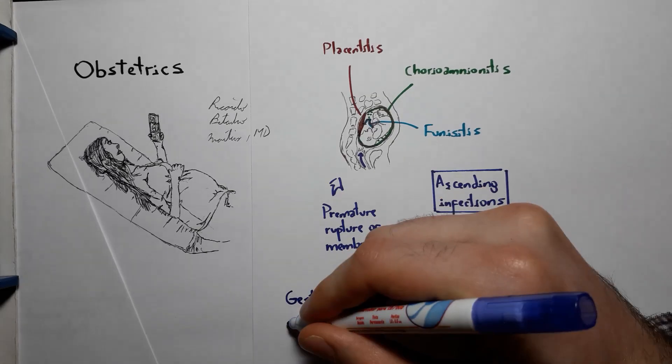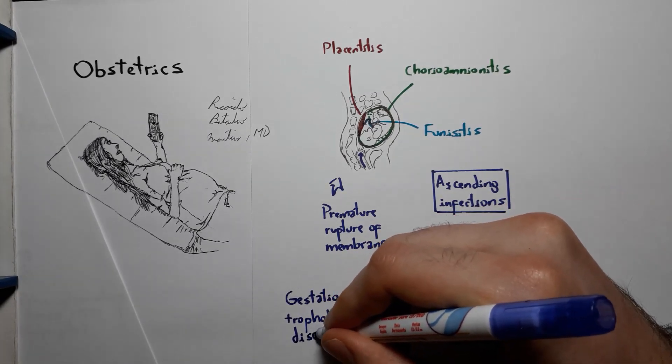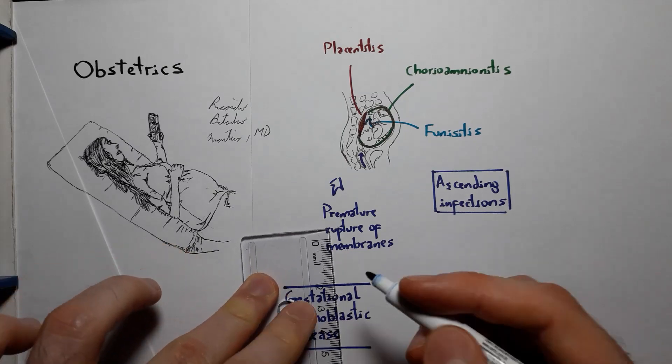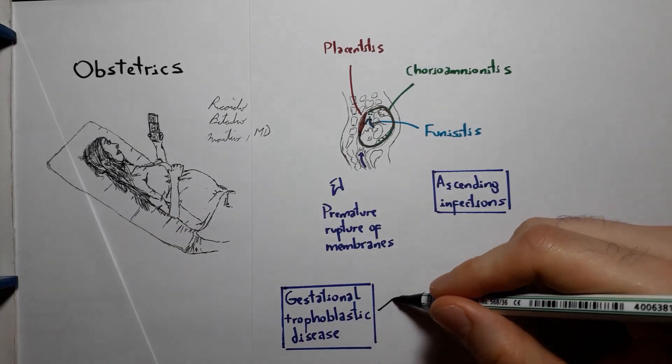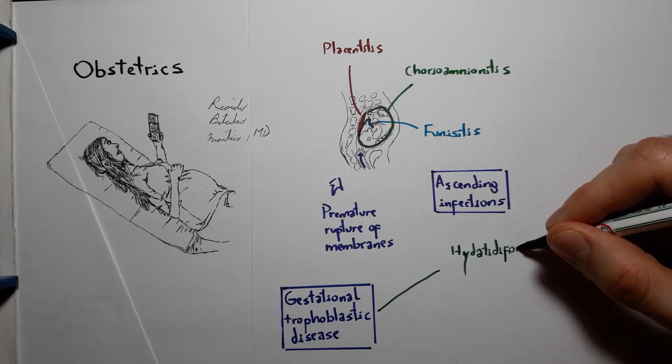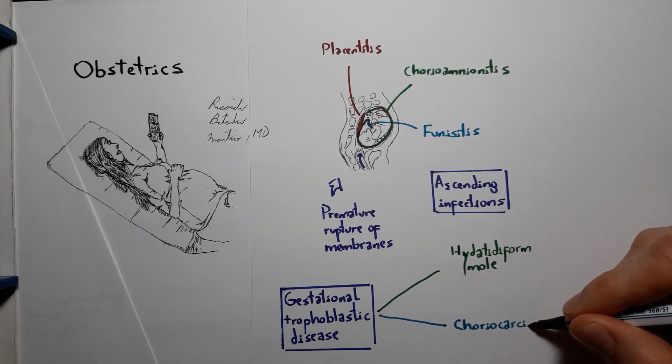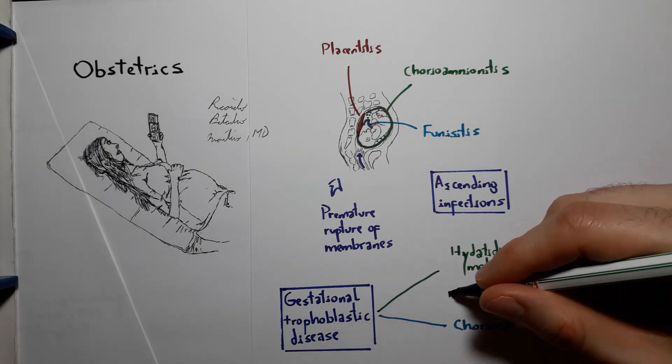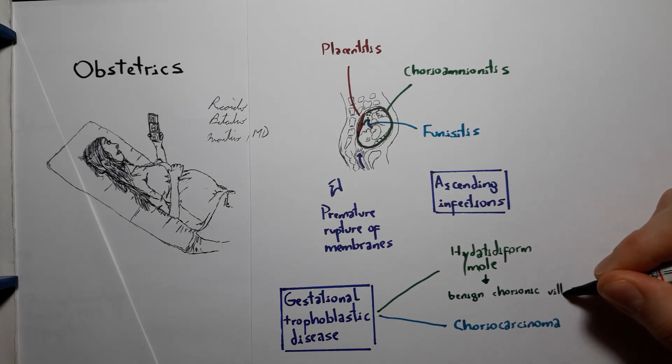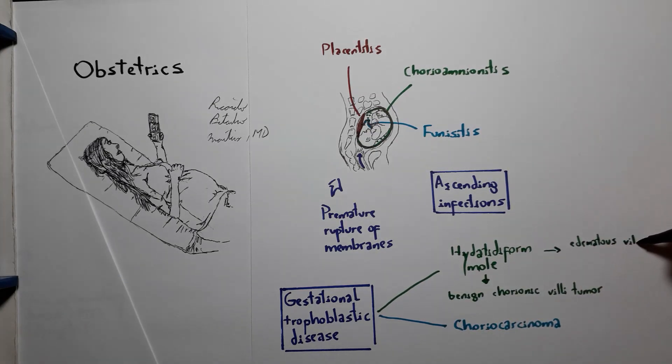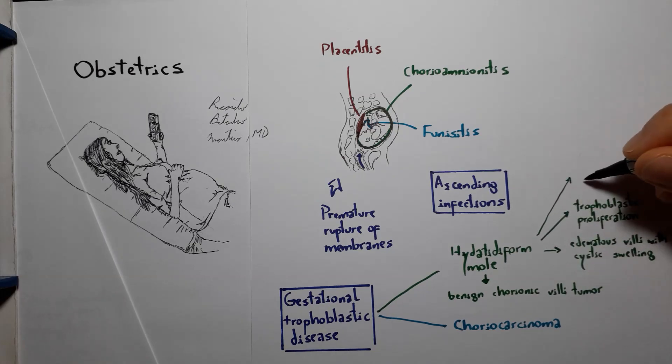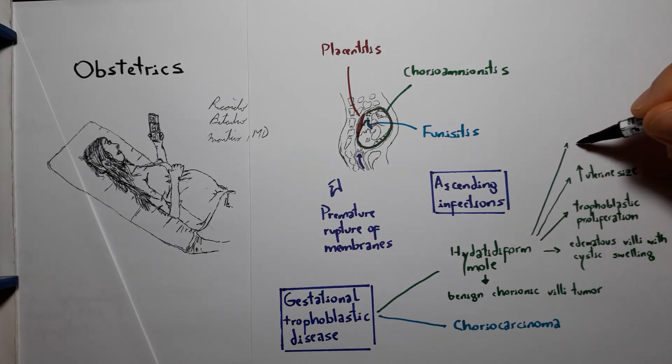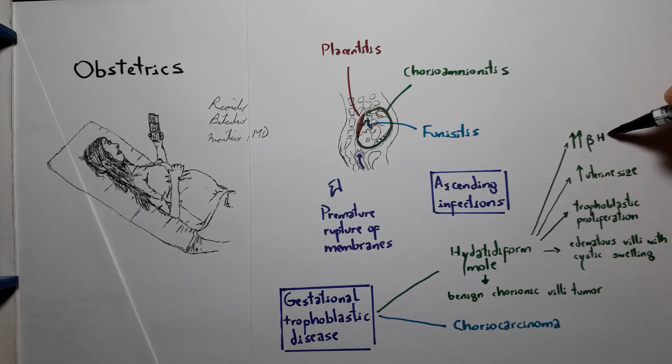Also concerning the placenta, we have the gestational trophoblastic diseases or gestational trophoblastic neoplasms, including hydatidiform mole and choriocarcinoma. Hydatidiform mole is the benign tumor of chorionic villi, presenting with edematous villi with cystic swelling, trophoblastic proliferation, larger than expected uterus for gestational age, and much higher beta-HCG measurement than expected in pregnancy.